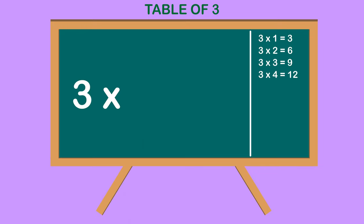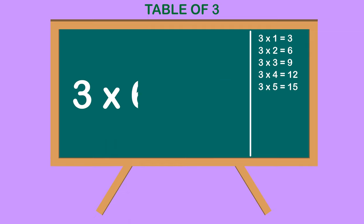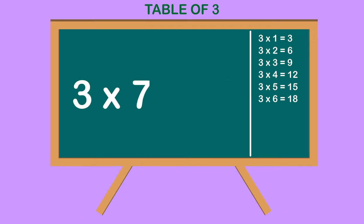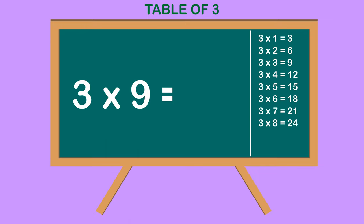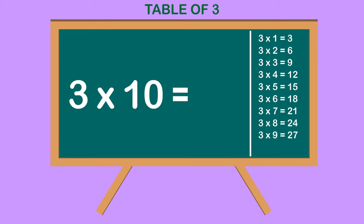3 5s are 15, 3 6s are 18, 3 7s are 21, 3 8s are 24, 3 9s are 27, 3 10s are 30.